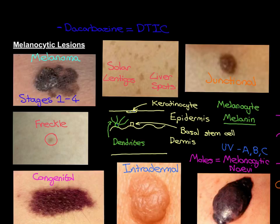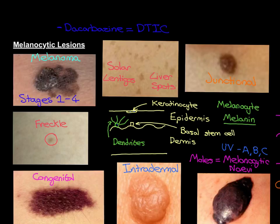Unfortunately, Dacarbazine generally doesn't manage to cure stage 4 melanoma. Instead, we give it to people with stage 4 melanoma to slow down the progression and manage symptoms. If we can keep the distal metastases as small as possible, then the symptoms they give rise to will be reduced. For instance, if you've got lung metastases, those are going to destroy healthy lung tissue and make you short of breath. If we keep those metastases small, we can reduce symptoms, improve quality of life, and prolong life, even though we can't actually cure the disease.